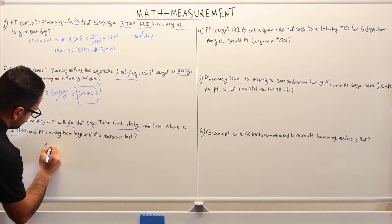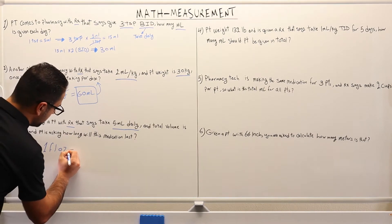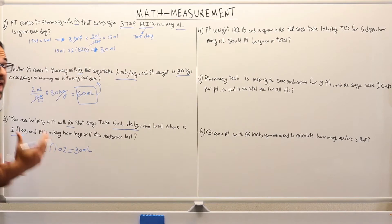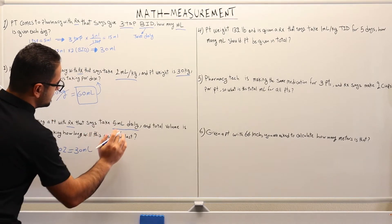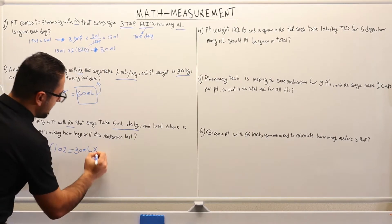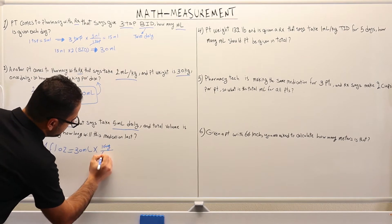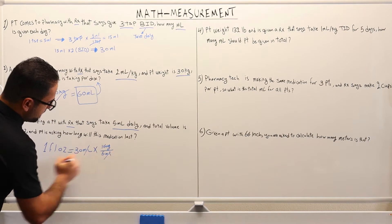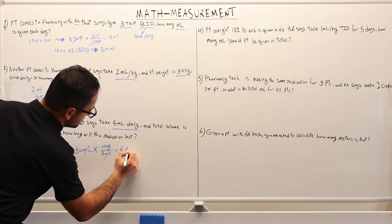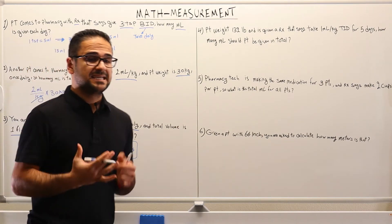We have one fluid ounce, and we know that one fluid ounce is approximately equal to 30 milliliters. The patient is receiving five milliliters every day, so we multiply 30 milliliters by one day over five milliliters. Canceling milliliters, we get 30 divided by five, which equals six days. So this prescription will last six days for this patient.